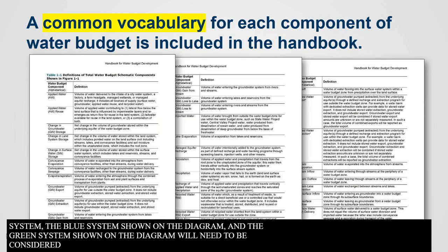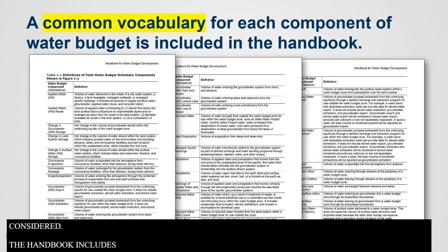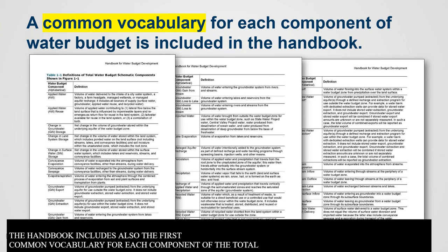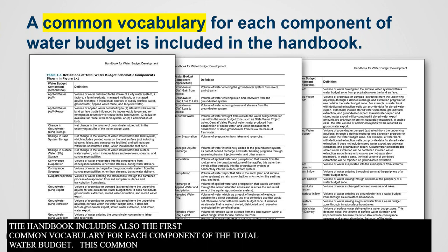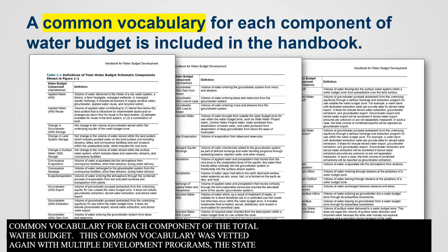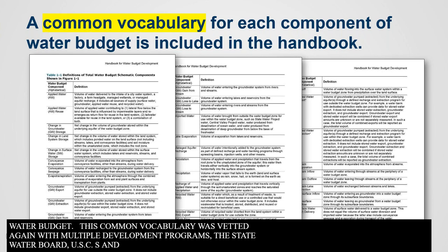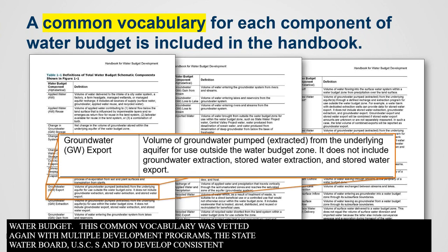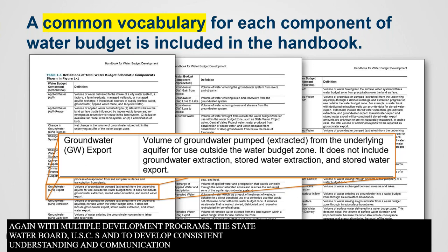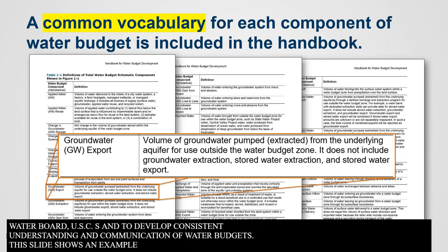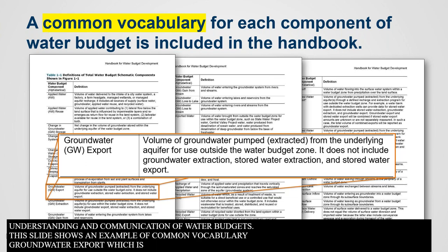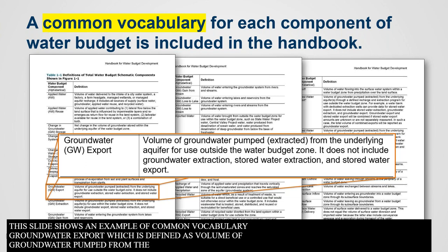The handbook also includes the first-ever common vocabulary for each component of the total water budget. This common vocabulary was vetted with multiple DWR programs, the State Water Board, USGS, and academia, to facilitate consistent understanding and communication of water budgets. This slide shows an example of common vocabulary — groundwater export — which is defined as the volume of groundwater pumped from the underlying aquifer for use outside the water budget zone.